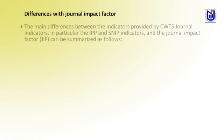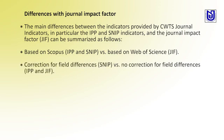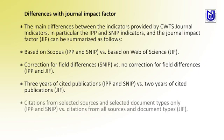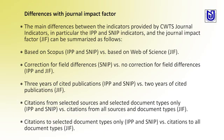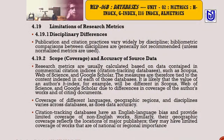The main differences between the journal indicators can be summarized as follows: IPP and SNIP are based on Scopus, while the impact factor is based on Web of Science. There is correction for field differences in IPP and SNIP versus no correction in the impact factor. IPP and SJR use three years of cited publications, versus two years for the journal impact factor. Citations are from selected sources and document types for IPP and SNIP, versus all sources and document types for the impact factor.